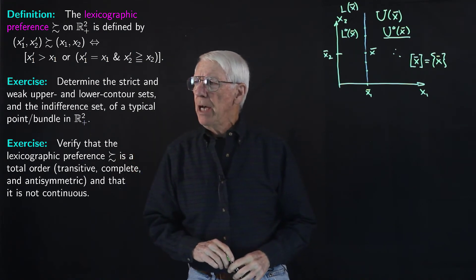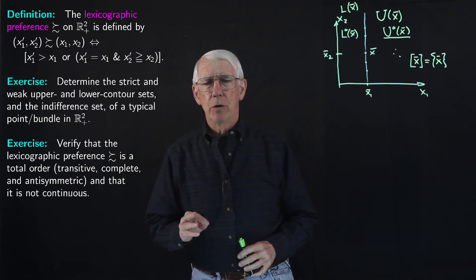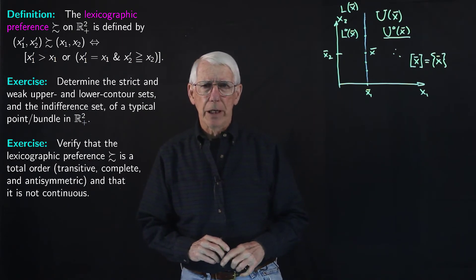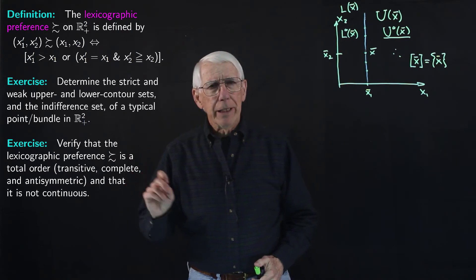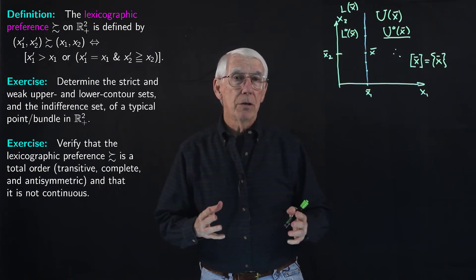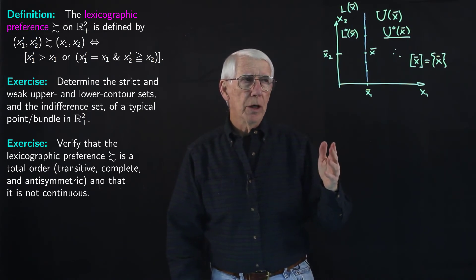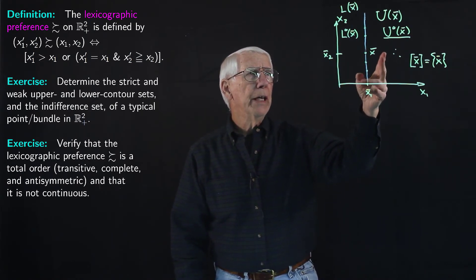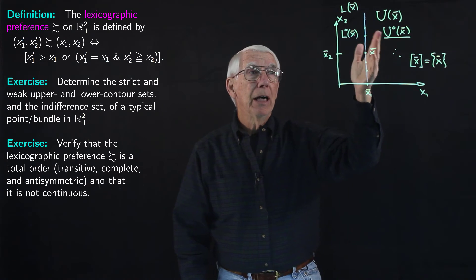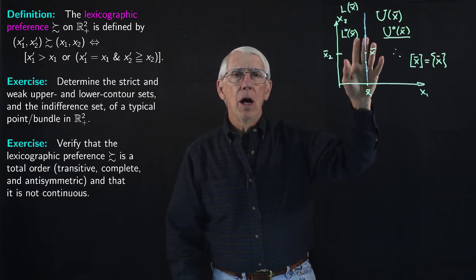The second part of the exercise says we want to show that the lexicographic preference is not continuous. It's a pre-order, but not a continuous pre-order. The first thing we need to do is recall our definition of a continuous pre-order. We have said that a pre-order is continuous if all of the strict upper and strict lower contour sets in the space are all open sets. That is, for any point X-bar in the space, both the strict upper contour set and the strict lower contour set of that point must be open sets, and that has to be true for all points in the space.